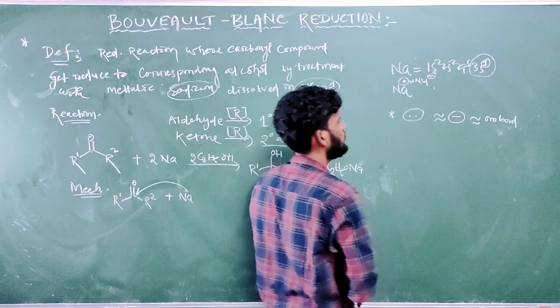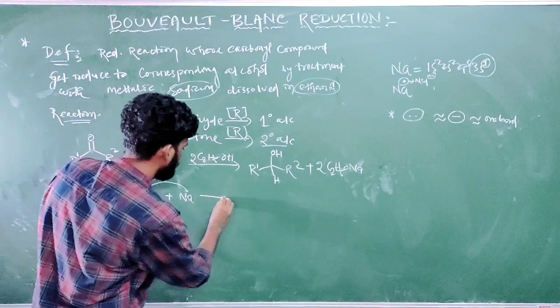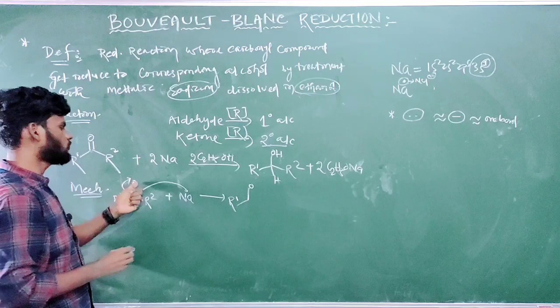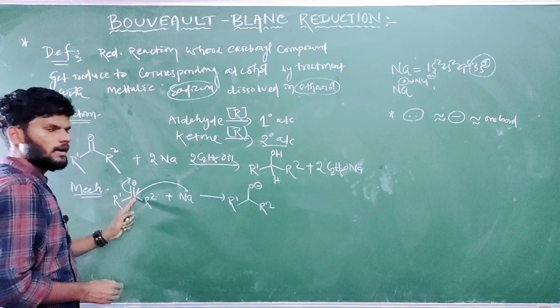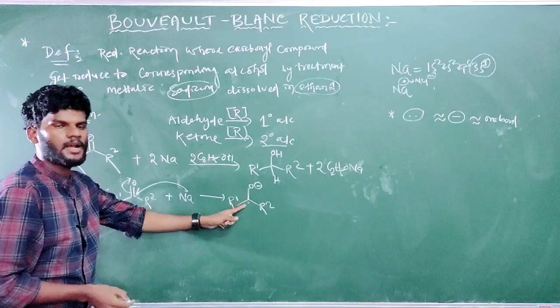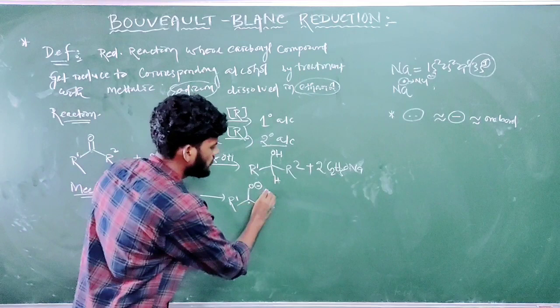When the single electron attacks this carbon center, the C=O bond moves over to oxygen. Then since that bond is similar to a negative charge, we get O⁻ here. After sodium donates its electron, it becomes Na⁺. So here Na⁺ remains as a counterion to O⁻, giving O⁻Na⁺.